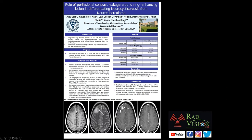Recently, a poster presented at ASNR also demonstrated the importance of perilesional contrast leakage around ring enhancing lesions in differentiating NCC from tuberculoma. This is another right frontal NCC case showing T2 hyperintense lesion with perilesional vasogenic edema and typical perilesional contrast leakage around conglomerate ring enhancing lesions, confirming NCC.